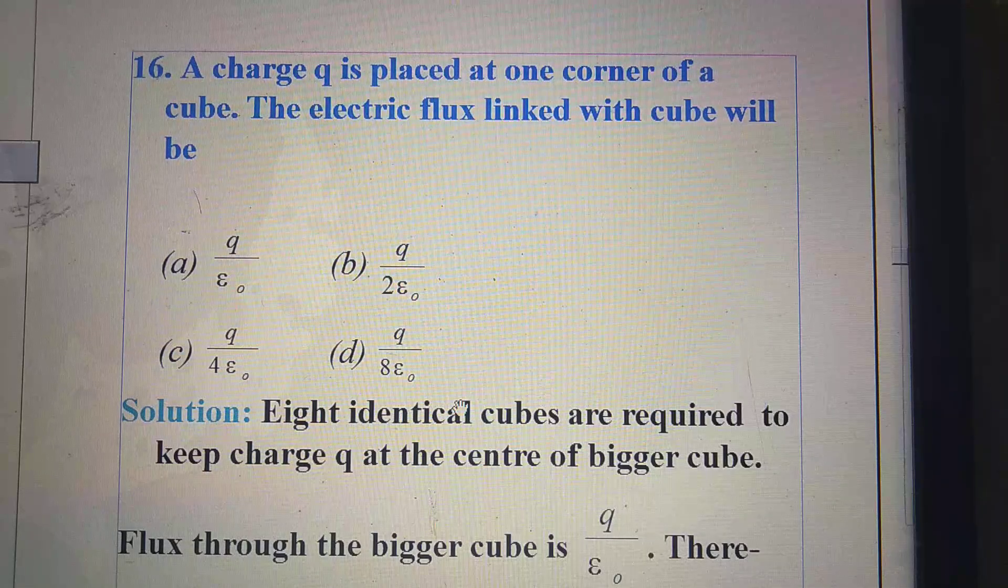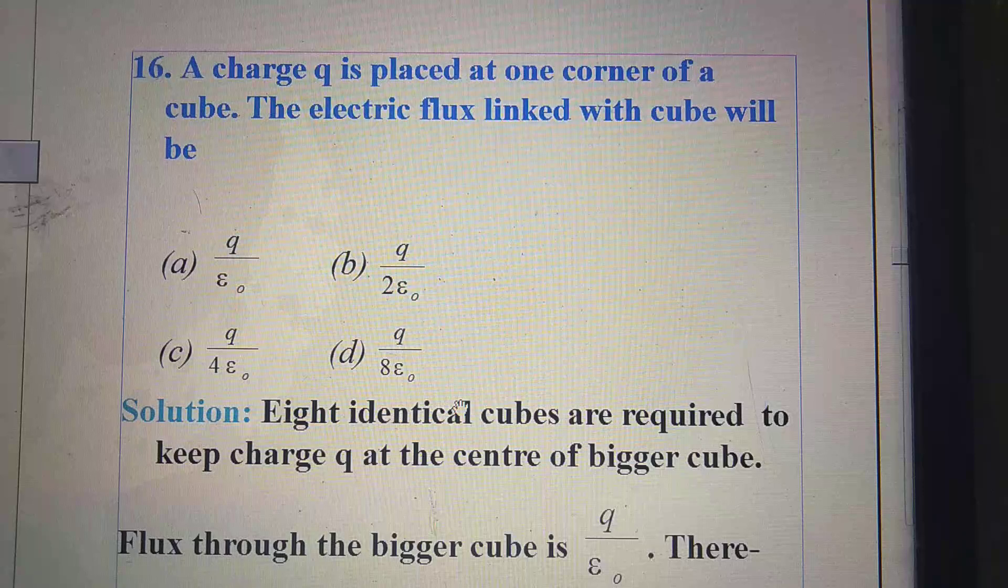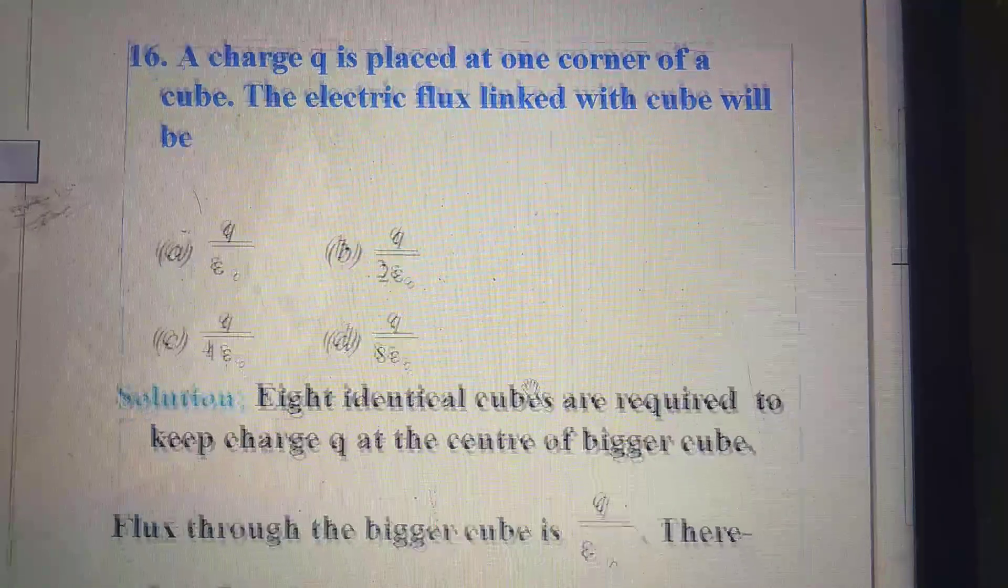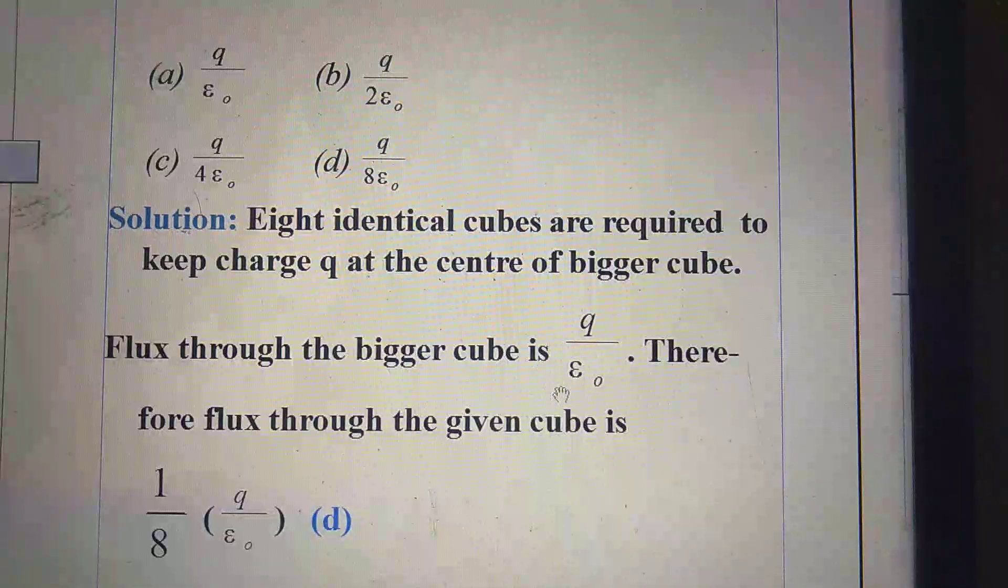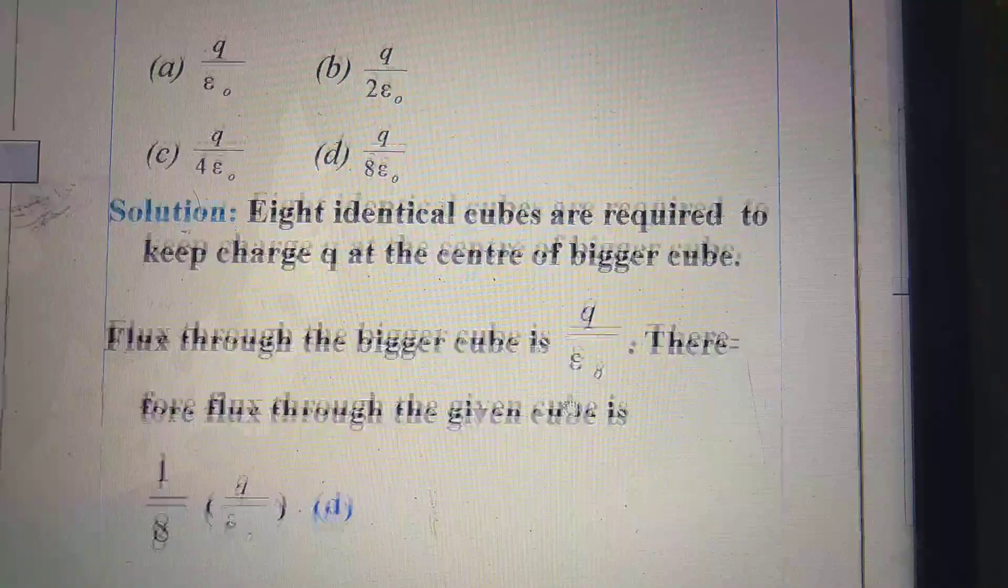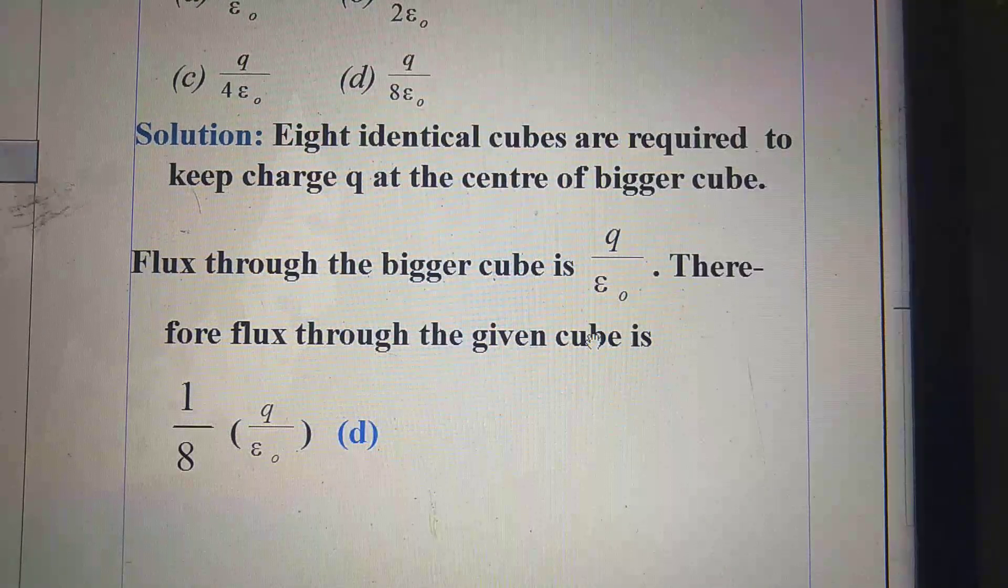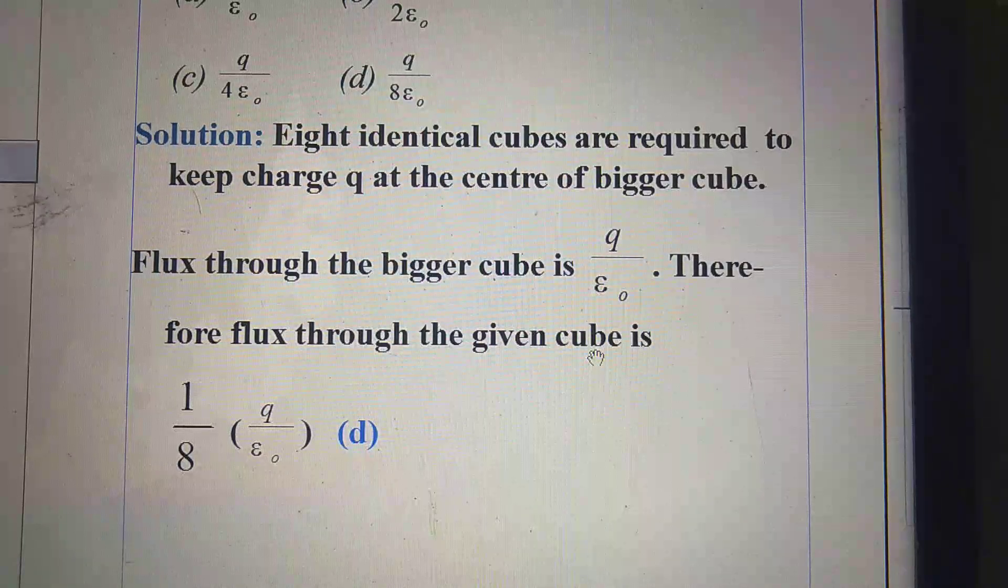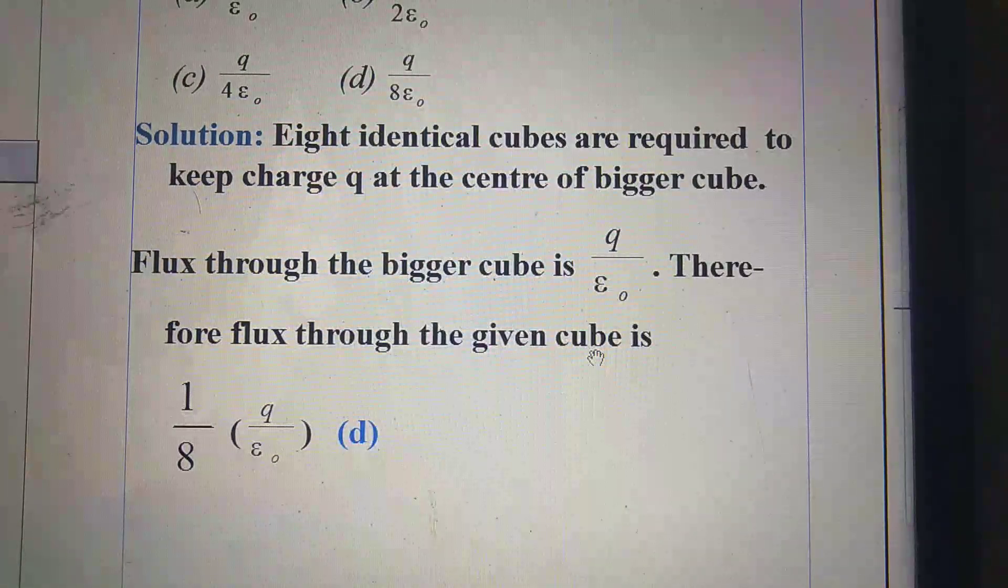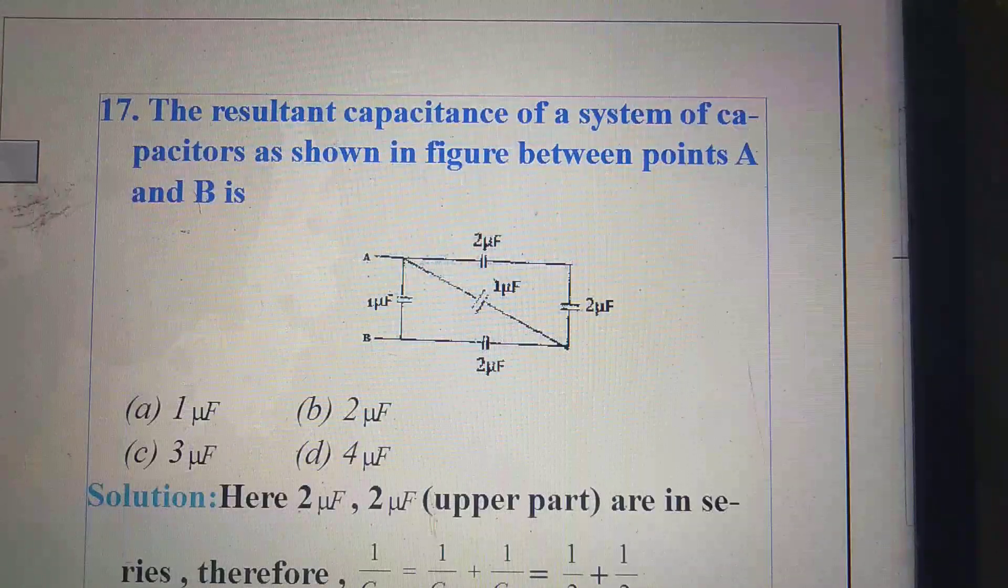Flux through the bigger cube must be Q by epsilon naught. Then, flux through each cube will be 1 by 8 into Q by epsilon naught. Therefore, option will be D, that is Q by 8 epsilon naught. Next question.